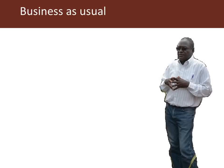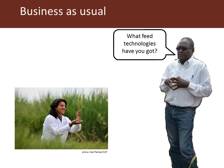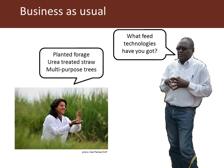The business-as-usual approach is that the extension worker or the researcher will approach a scientist and say we've got this group of farmers with a series of feed problems — what feed technologies have you got that can help these farmers? The researcher comes back with a range of options, including planted forages, urea treated straw, multipurpose trees and so on, and takes them back to the farmers. So there's this kind of scattergun approach to it.